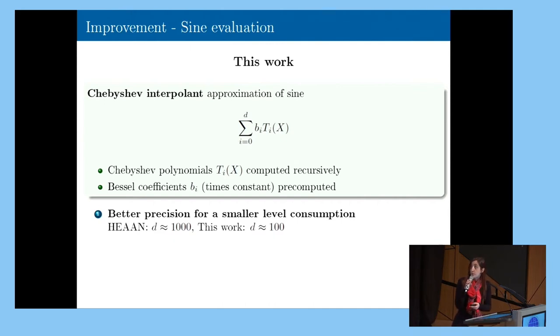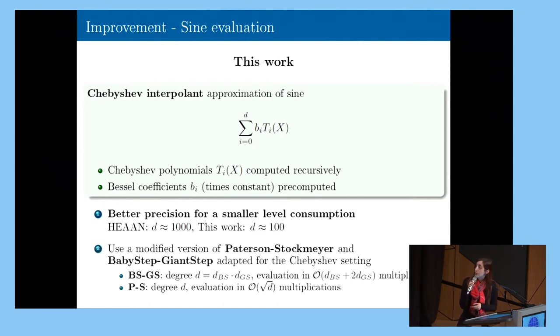And in order to be able to evaluate this Chebyshev interpolant efficiently, we decided to use a modified version of the Paterson-Stockmeyer algorithm mixed together with the baby step giant step technique that needs to be adapted for the Chebyshev setting. So we are able to evaluate this polynomial in about square root of d non-trivial multiplications between ciphertexts.